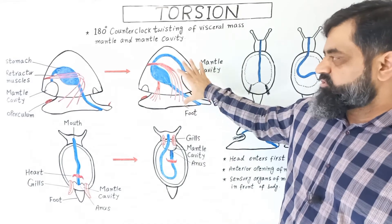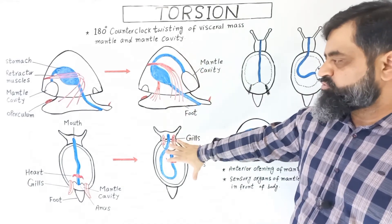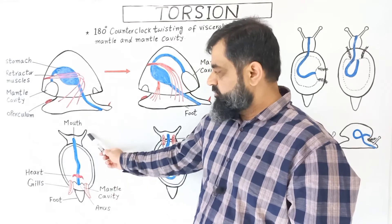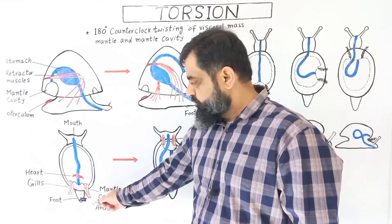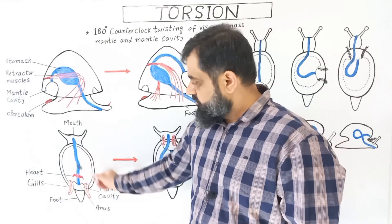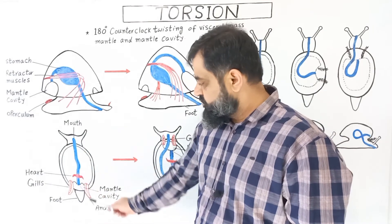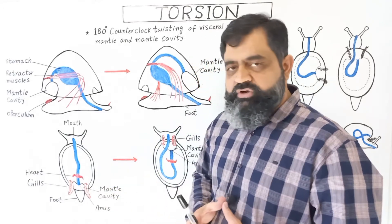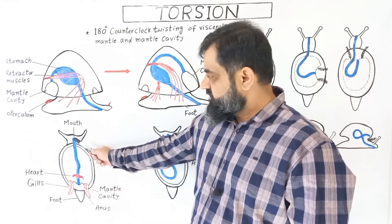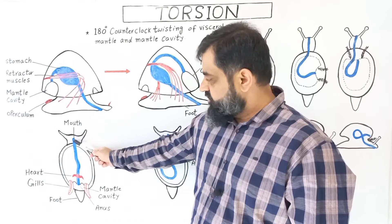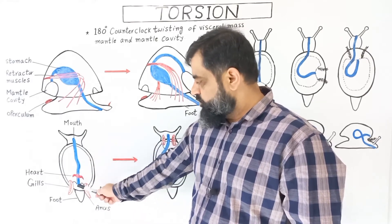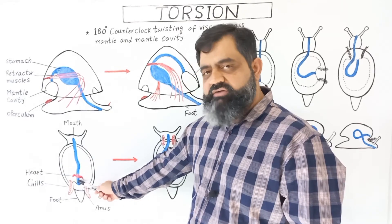Now let's look at this process of torsion from another view. This is a lateral view, and now I am going to show you a dorsal top view of the diagram. This is a snail — the anterior portion of the foot containing the mouth, the posterior portion of the foot, and the shell outline around it. The mantle cavity is on the posterior side of the body and contains gills — right gill and left gill — which are important organs for respiration. On the posterior side there is also a heart. The anterior surface contains the mouth and the digestive tract runs as a straight line, opening into the mantle cavity, where undigested material exits through the anus and is released into the water.